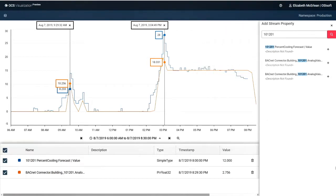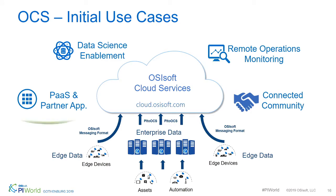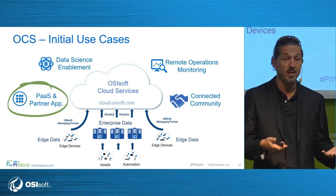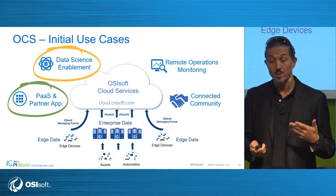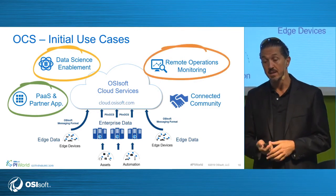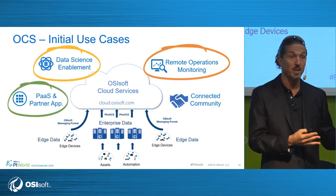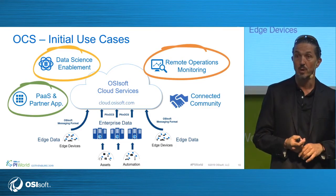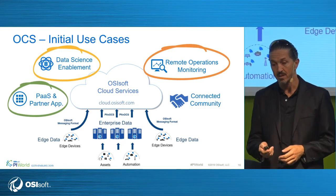We wanted to show something valuable first, but now let's go back to the initial scenarios we targeted with OCS — they haven't changed in three years. The first is platform-as-a-service and partner apps: you can use OCS as a playground to build your own applications and integrations with our cloud platform, and we have partners connecting to OCS and delivering added value on top of the data. Data science is circled in orange because it's almost released — in preview now. Remote operation monitoring is another scenario: connecting with EDS and OMF applications gives you visibility to devices and assets you couldn't reach before. Community is already working with partners and will become more user-friendly in coming months.